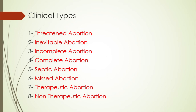Now we will discuss the clinical types or clinical varieties of abortion. We differentiate between every type by important items: number one, manifestations of pregnancy — present or absent; number two, bleeding — whether severe, mild, or moderate; number three, pain — whether mild or severe; the condition of the cervix — whether closed or dilated; and whether there is rupture of membranes or passage of fetal tissue. These items will differentiate every type from the other.